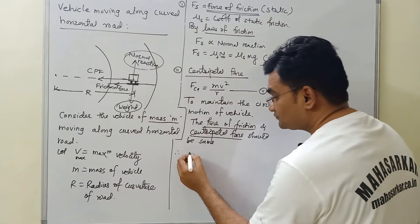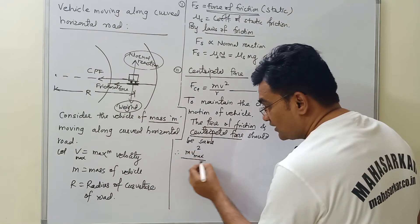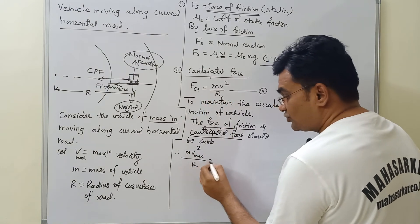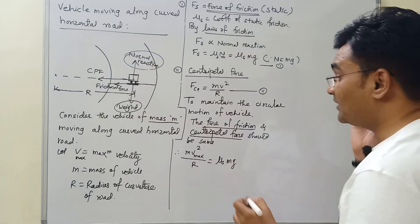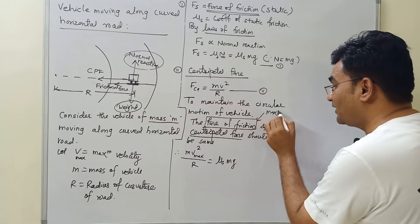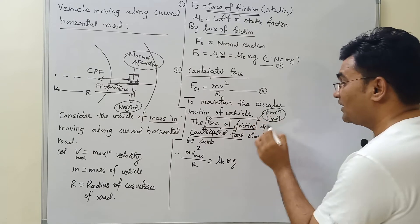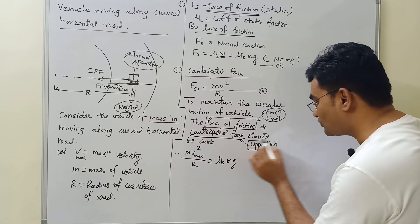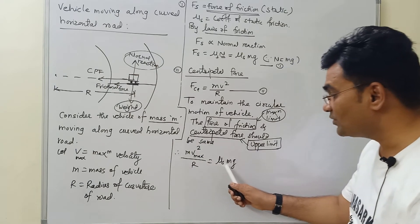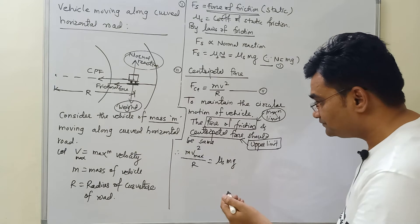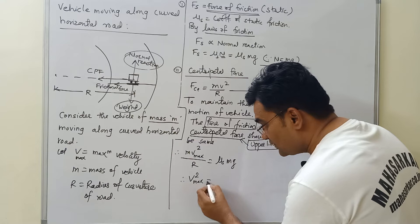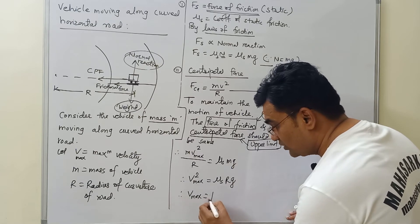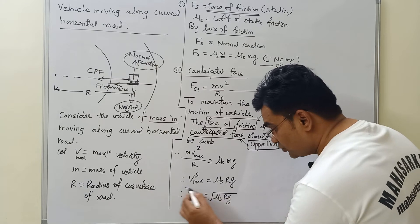Therefore, in short, I can write: mv²_max divided by R should be equal to μs times mg. Cancelling m from both sides, v²_max equals μs times R times g. Taking the square root on both sides, v_max equals the square root of μs times R times g. This is the expression for the maximum safety speed of a vehicle moving along a curved horizontal road.